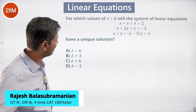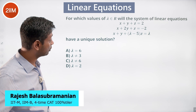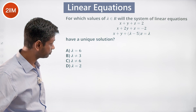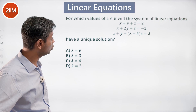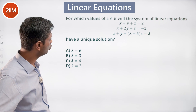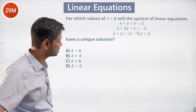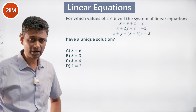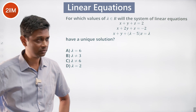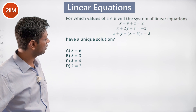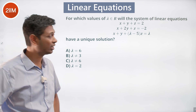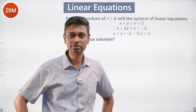For which values of lambda belonging to R does the system of linear equations — x plus y plus z equal to 2, x plus 2y plus z equal to minus 2, x plus y plus (lambda minus 5)z equal to lambda — have a unique solution? The three equations should not be able to generate one from the other.